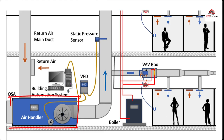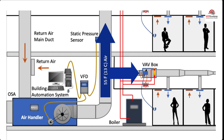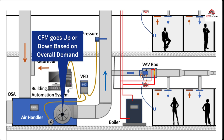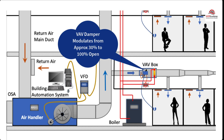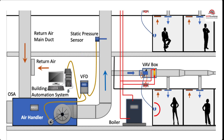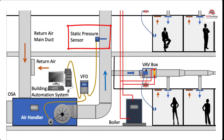The air handler will deliver a constant temperature of 55 degrees Fahrenheit or 13 degrees Celsius supply air to the VAV boxes. While the supply air temperature stays constant, the volume CFM of air will vary based on the total demand of all the zones on the system. There are several control strategies to adjust the speed of the fan which we'll discuss later. As the VAV boxes open or close their damper due to demand called for by the temperature sensor in the space, the pressure in the main supply air duct will either increase or decrease. This pressure change is picked up by a static pressure sensor in the main supply air duct.